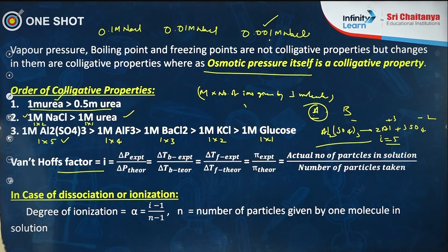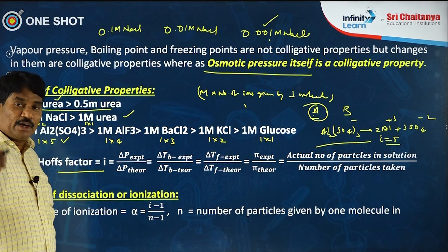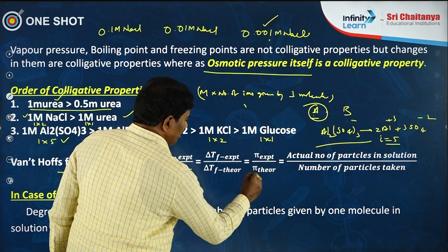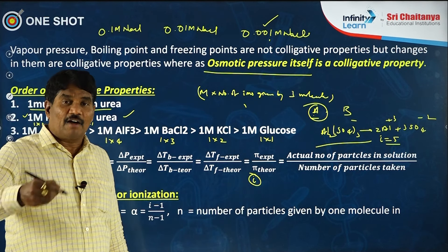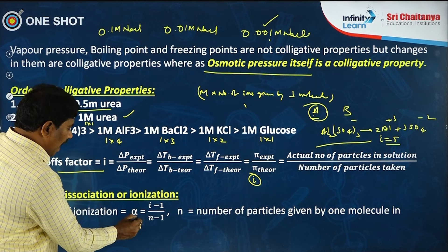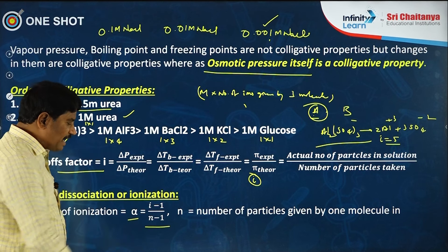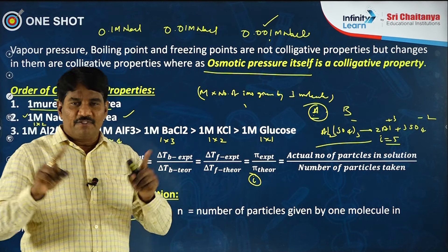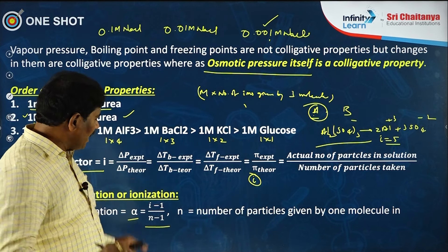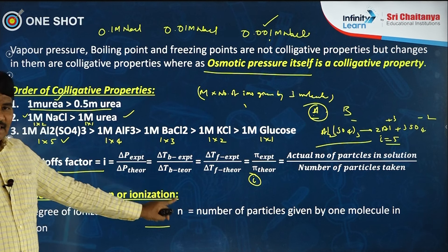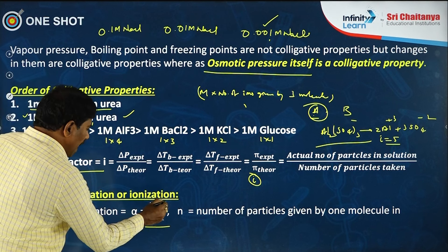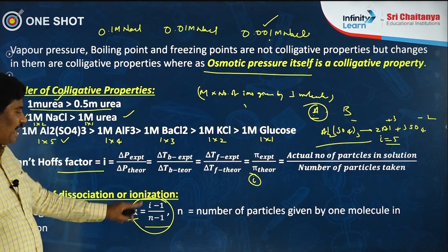For dissociation or ionization, to calculate colligative properties we require the i factor, which depends on the degree of dissociation or percentage of ionization. The degree of ionization α = (i − 1) / (n − 1). We can use one formula for both ionization and association.